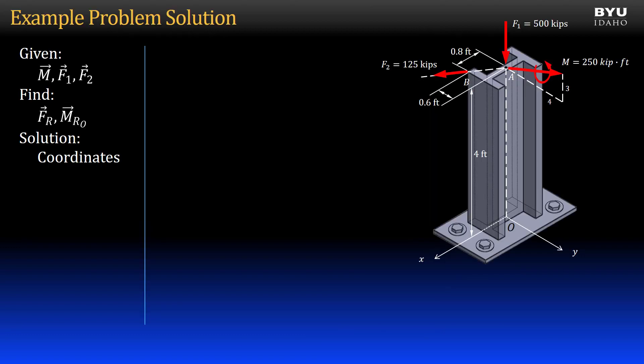First, we will get the coordinates of the key points. Point O is at the origin. Point A is 4 feet from the origin in the positive Z direction. And point B, relative to the origin, is 0.8 feet in the positive X direction, 0.6 feet in the negative Y direction, and 4 feet in the positive Z direction.